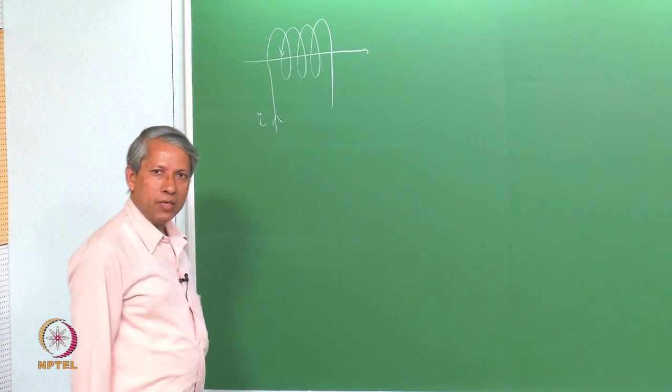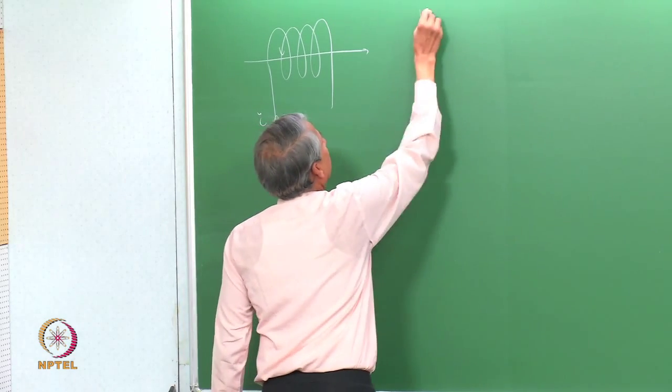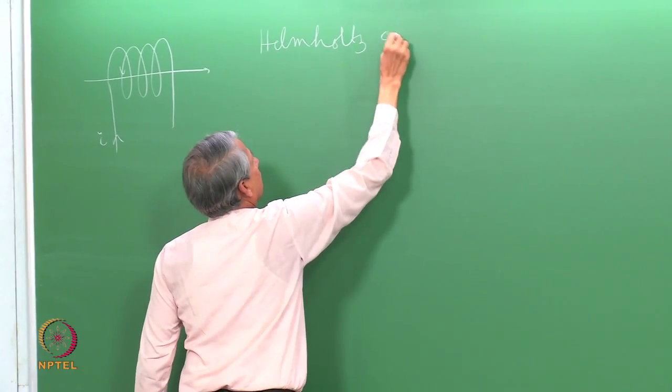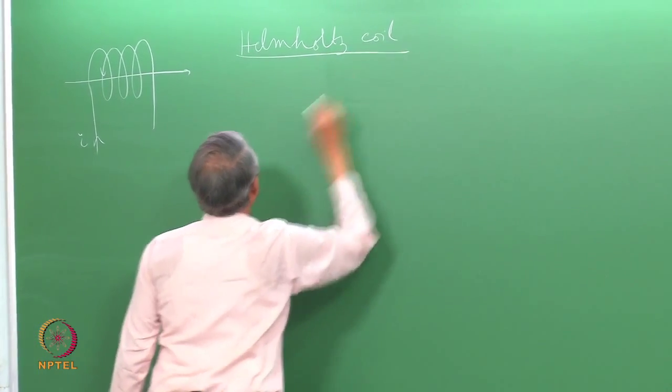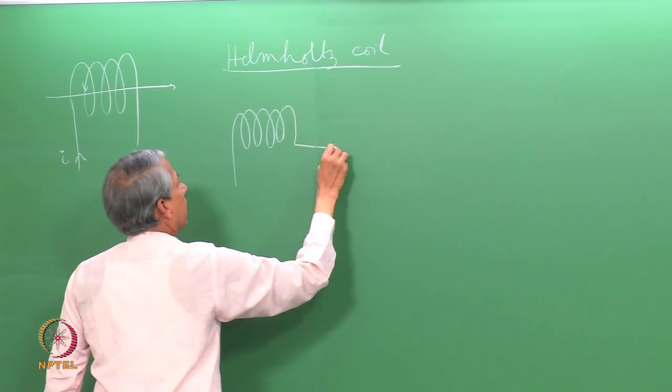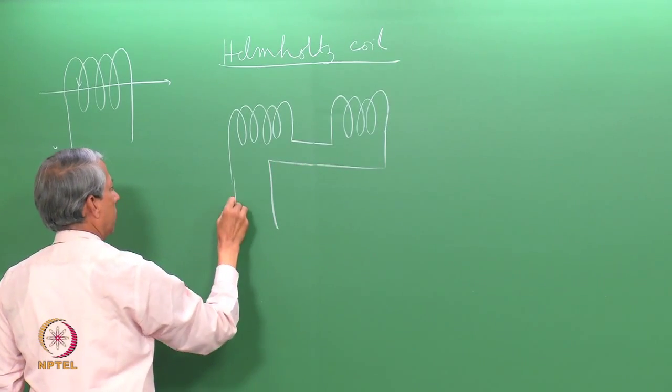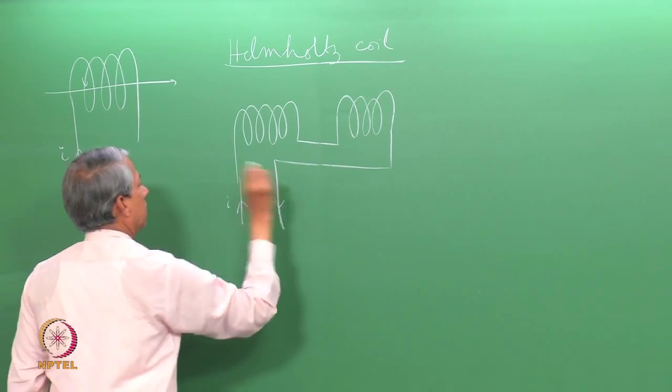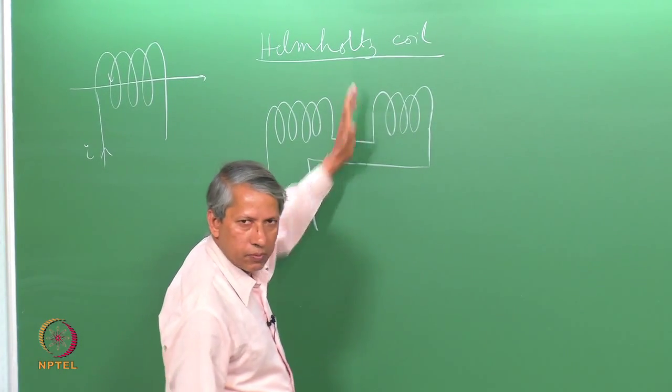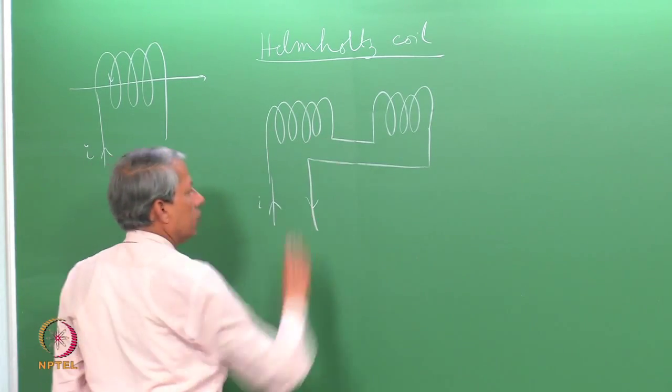For EPR experiments, we use a special type of coil called a Helmholtz coil. The coil goes here, then there is a gap, and then another part of the coil comes here. We apply current here, and the magnetic field will form here. This is the place where the sample is kept. But this is not good enough because the magnetic field strength will not be very high.